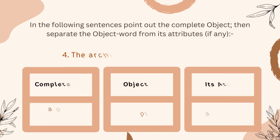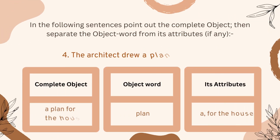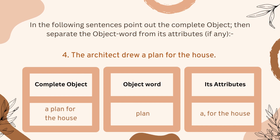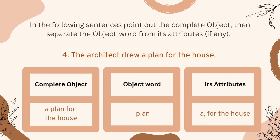Number four: 'The architect drew a plan for the house.' Here, 'a plan for the house' is the complete object. 'Plan' is the object word, and the words 'a' and 'for the house' are used as attributes of the word 'plan.'